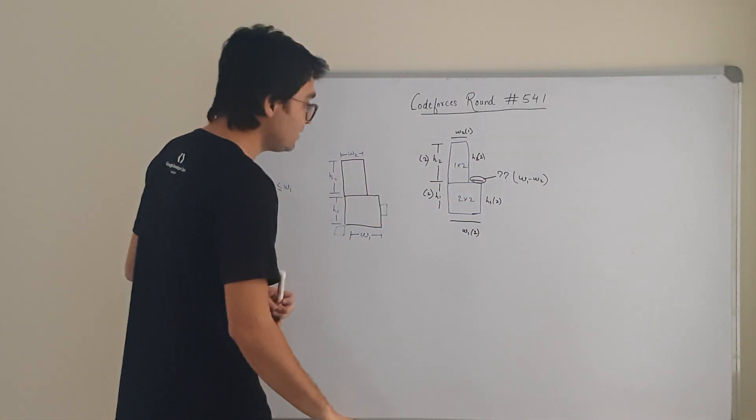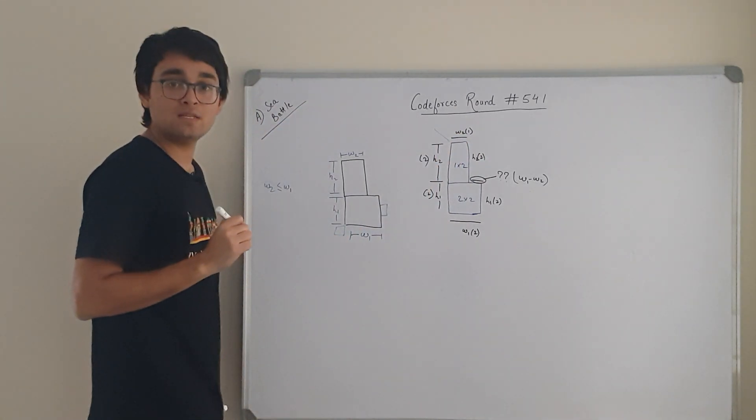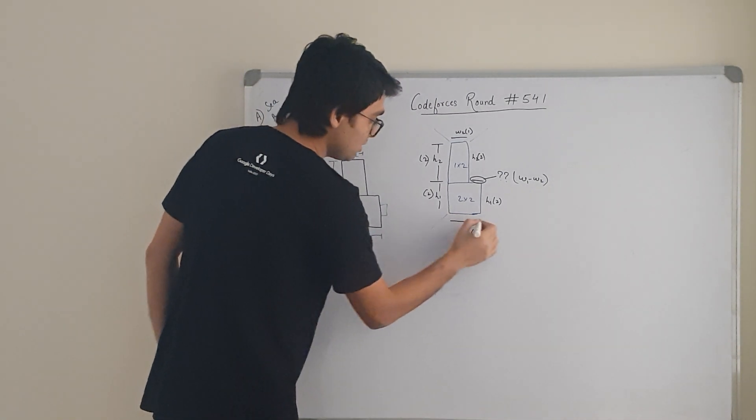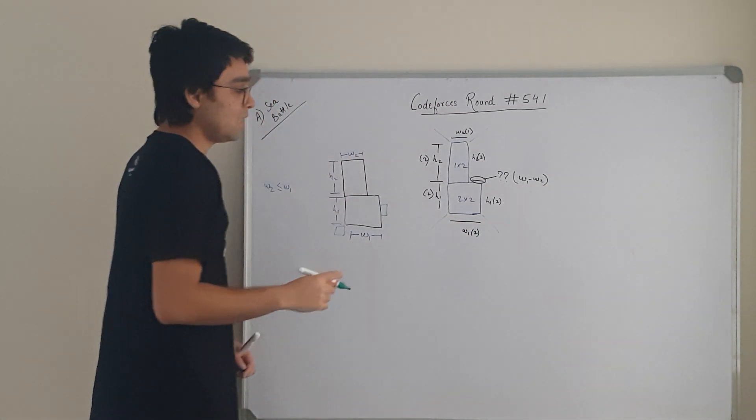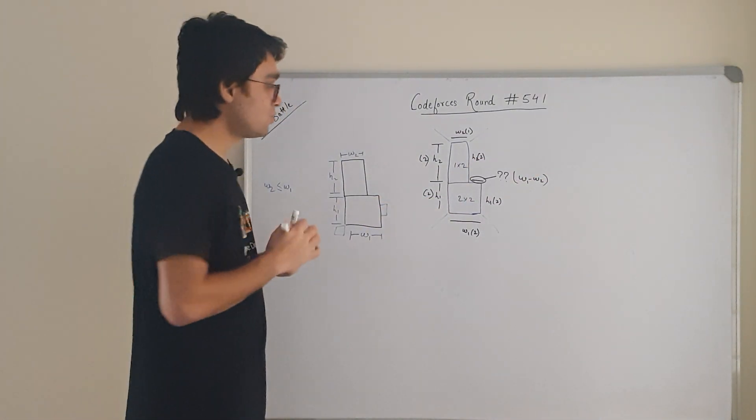What we are left with is we will have this corner as a neighboring cell, this corner as a neighboring cell. Now this corner and this corner. As we have already considered this place to be W1 minus W2, we are not taking that.